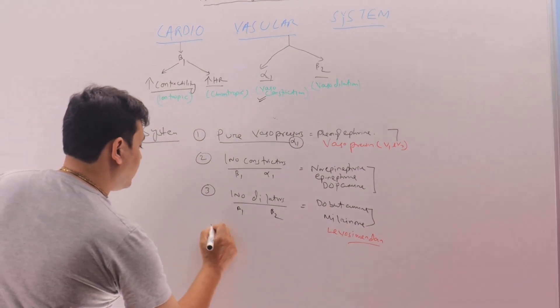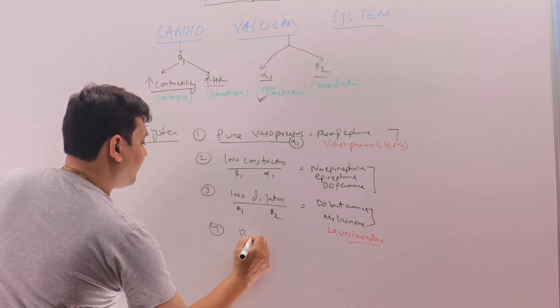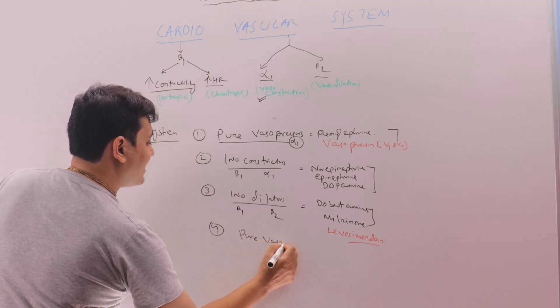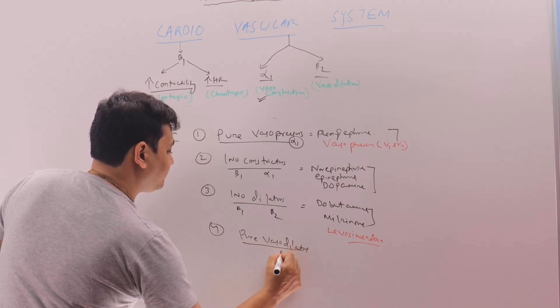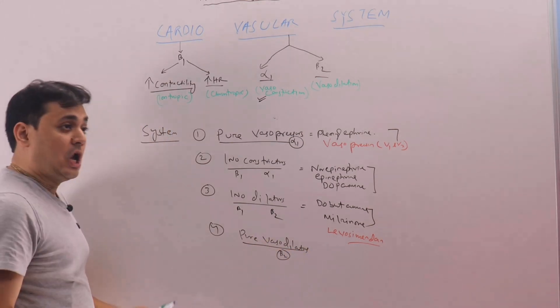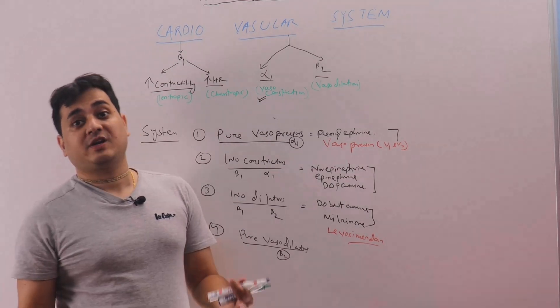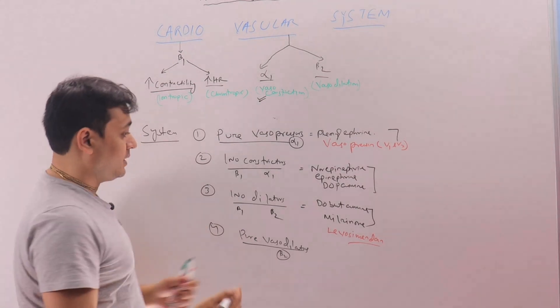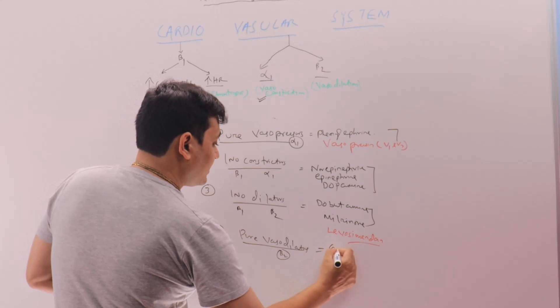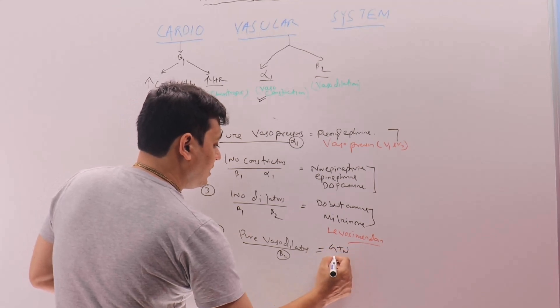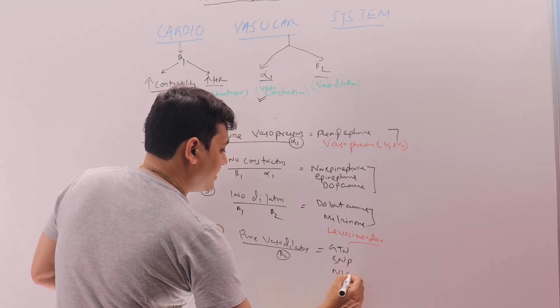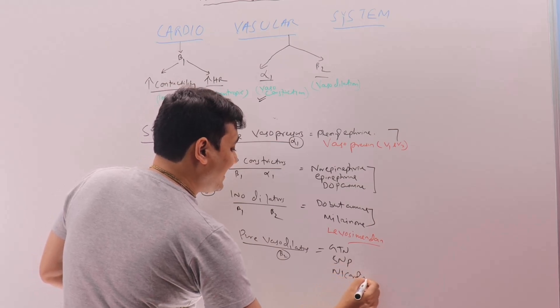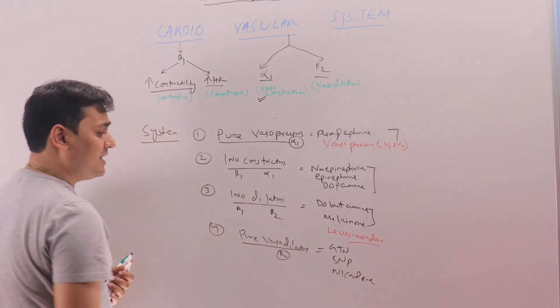Number 4 is pure vasodilators. So only beta 2. They will only dilate the blood vessels, which in shock we do not require. But in hypertensive emergency and urgency that will be required. And there we have GTN, sodium nitroprusside, nicardipine, all these drugs. And they are helpful not in shock, but in hypertensive urgency or emergency.